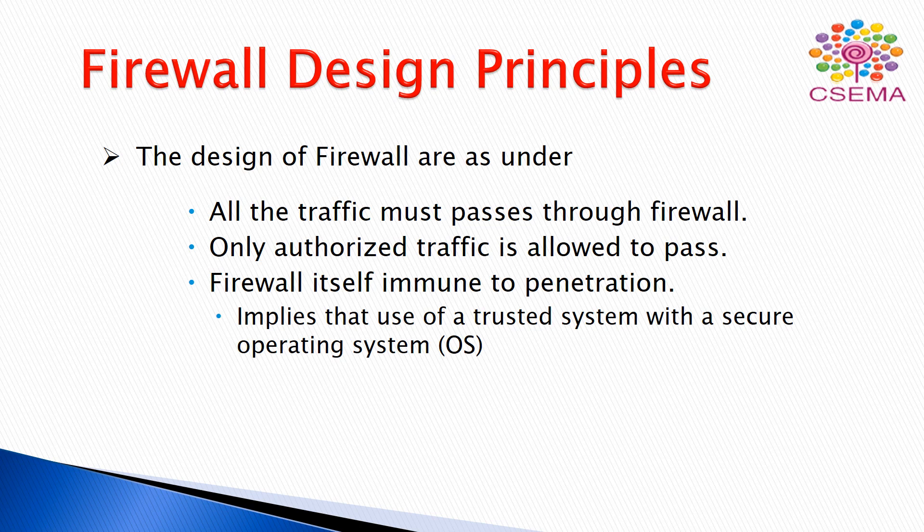There are three essential principles to follow when creating a firewall. First, all traffic must pass through the firewall — since the firewall monitors and filters all packets, every packet must go through it. Second, only authorized traffic is allowed to pass through the firewall. Third, the firewall itself must be immune to penetration, meaning it must be a secured system — like a trusted operating system — that is not affected by other content or programs.